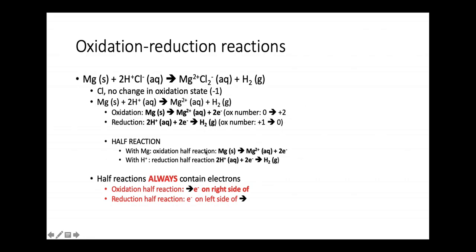We have a half reaction for oxidation and a half reaction for reduction. For the oxidation half reaction: Mg → Mg²⁺ + 2e⁻ — producing electrons because oxidation means loss. For the reduction half reaction: 2H⁺ + 2e⁻ → H2 — gaining electrons. In any oxidation-reduction reaction we always have two half reactions. A half reaction always contains electrons: for oxidation, electrons are on the right-hand side; for reduction, electrons are on the left-hand side.